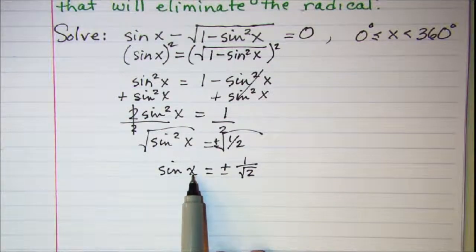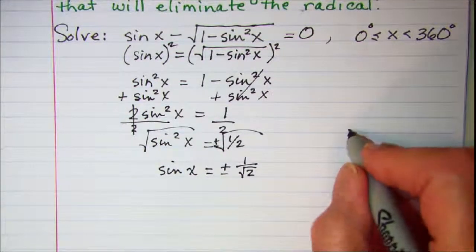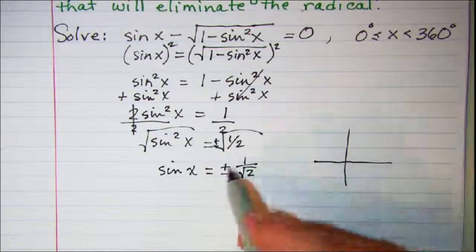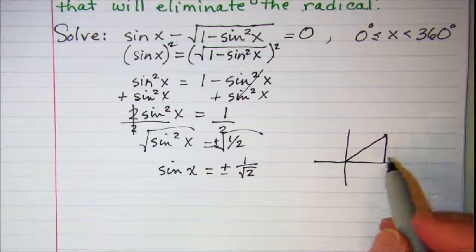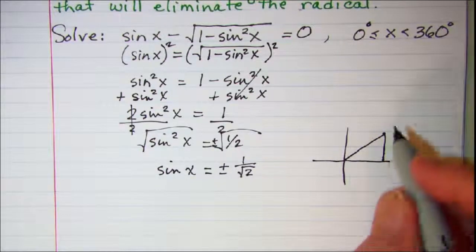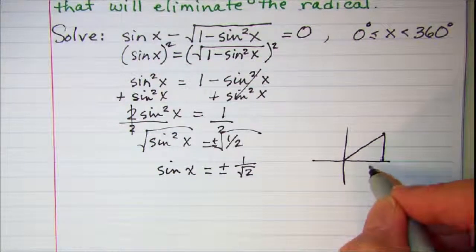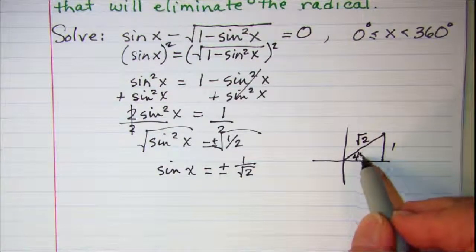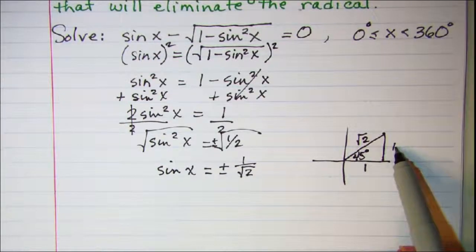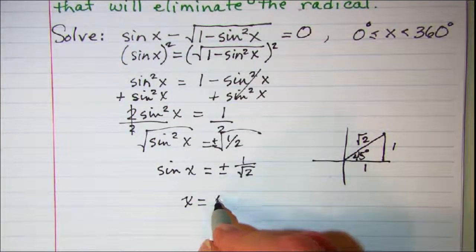We're looking for an angle x whose sin is either a positive or a negative 1 over root 2. We can draw our reference triangles. Since it's either positive or negative, my triangles will be in all four quadrants. Whenever I have a root 2, I know it's a 45-45-90 triangle. The sin of this 45-degree reference angle is 1 over the square root of 2, so x is 45 degrees.